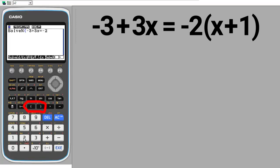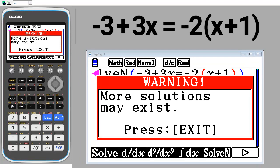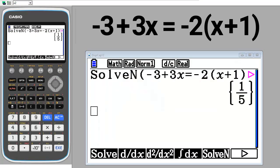Negative 2. The parenthesis buttons are here. Open parenthesis, x, plus, 1. We have to close this parenthesis. Close the parenthesis again. You can see how the parenthesis are color coded to help you make sure that all the required parenthesis are closed. To get the answer, press the Exe button. This red warning message appears. Don't worry about it. Press the Exit button to make it go away. After you press the Exit button, the answer appears. X equals 1 fifth.